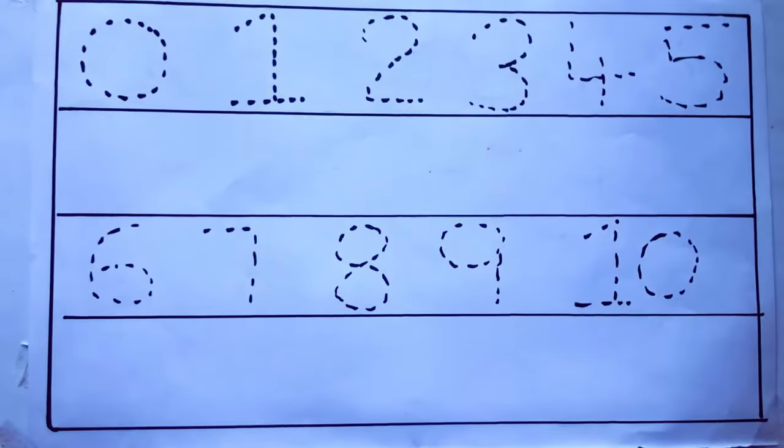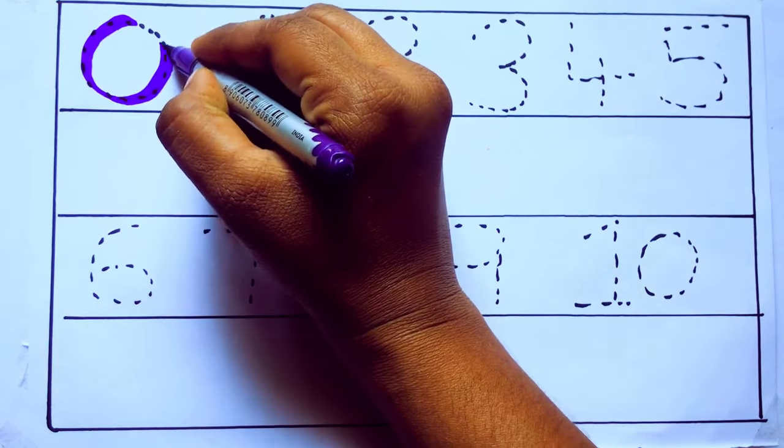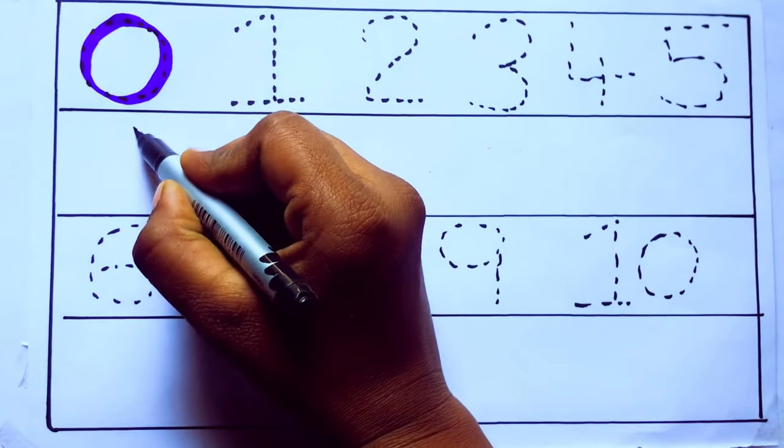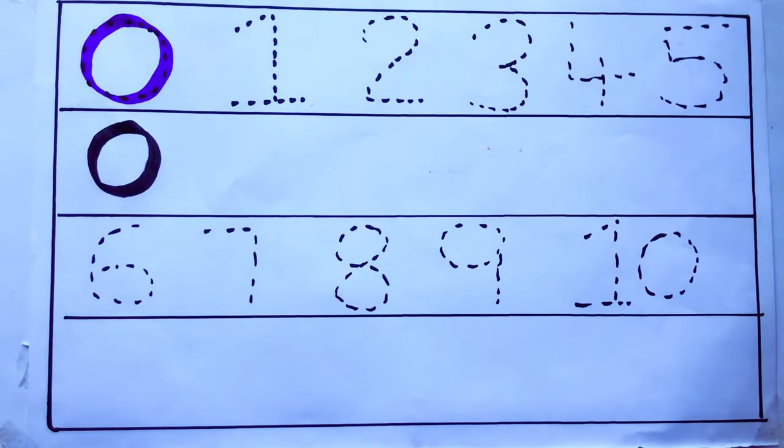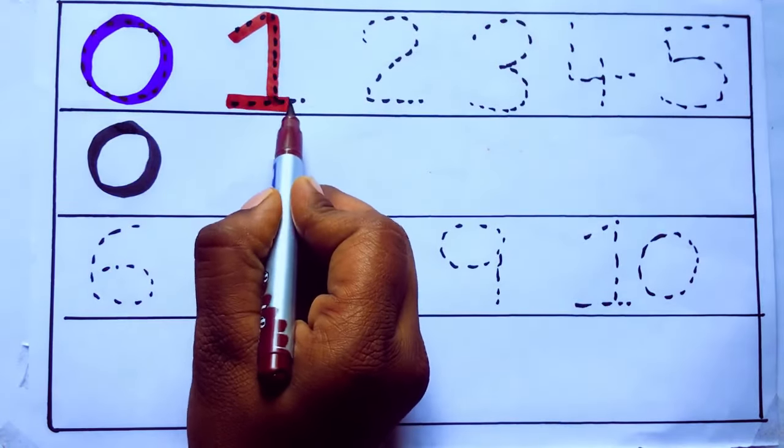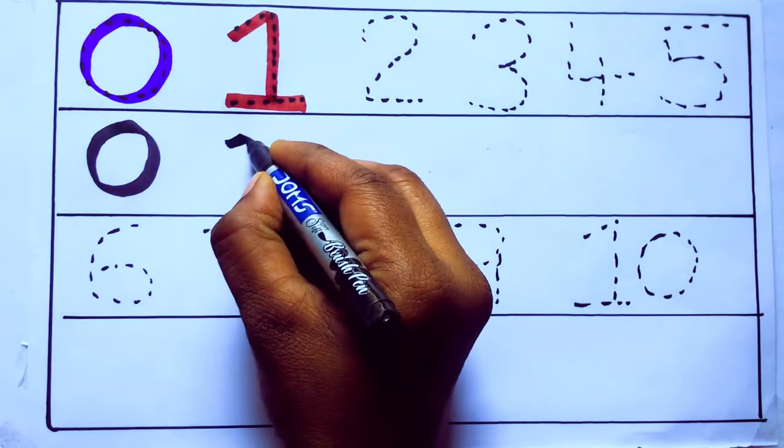Let's draw numbers. Violet color, 0, Z-E-R-O. Brown color, 1, O-N-E, 1, number 1.